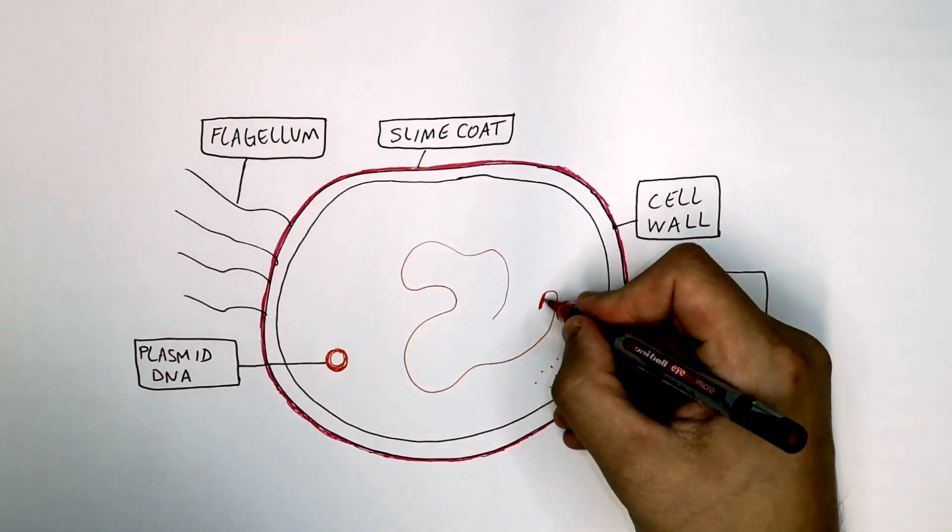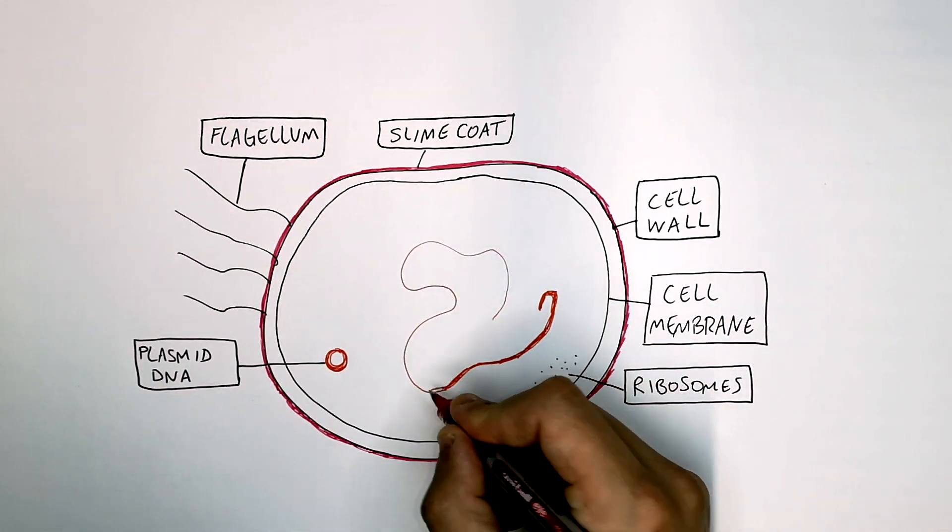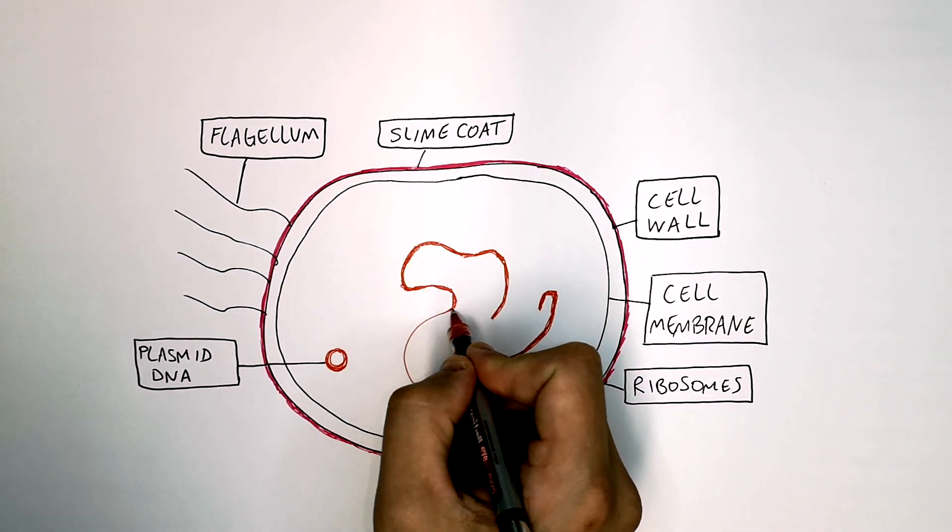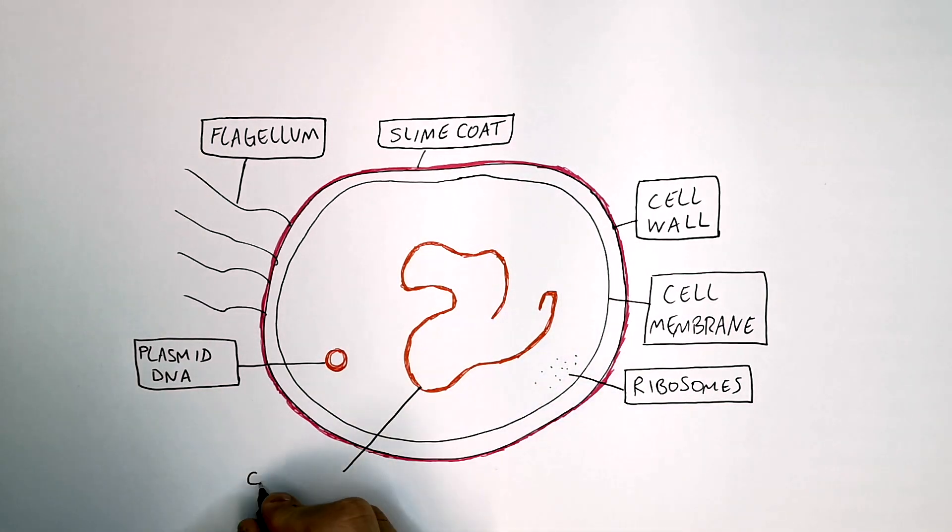and it's got chromosomal DNA. So this is free DNA inside the cytoplasm of bacteria. It's got no nucleus, plasmid DNA, and chromosomal DNA.